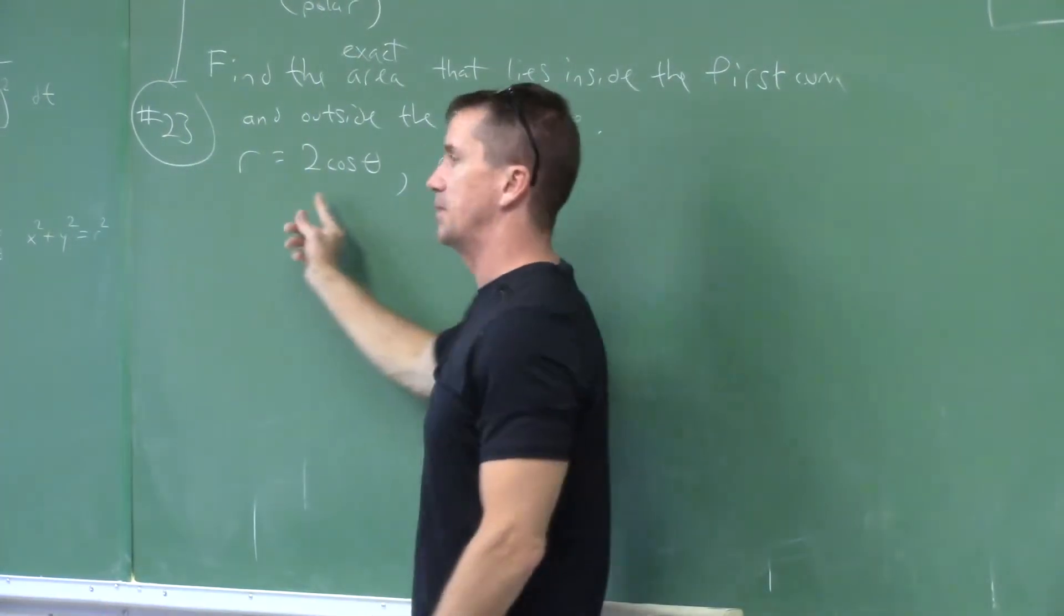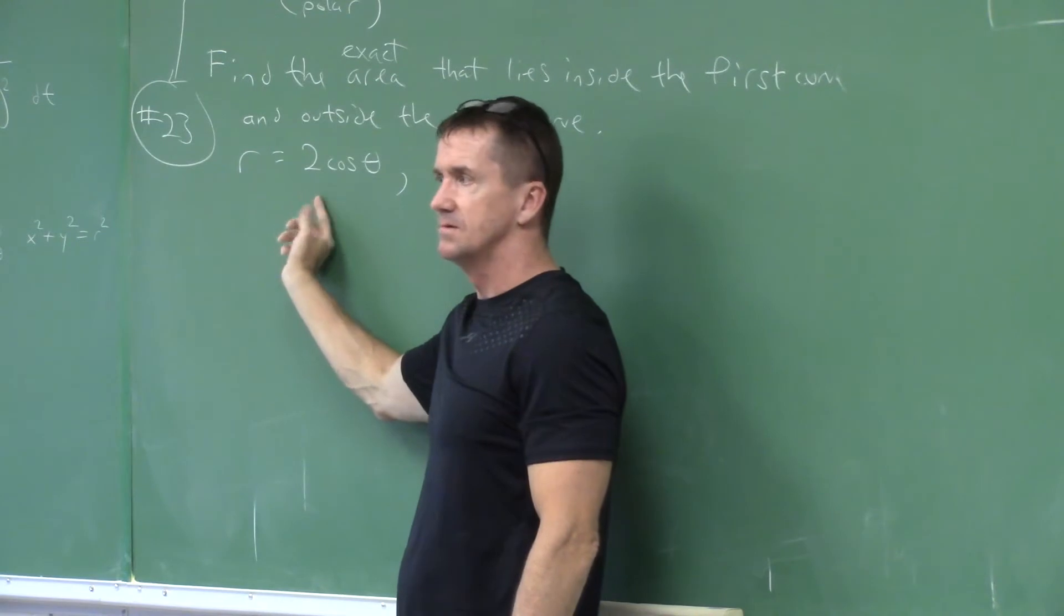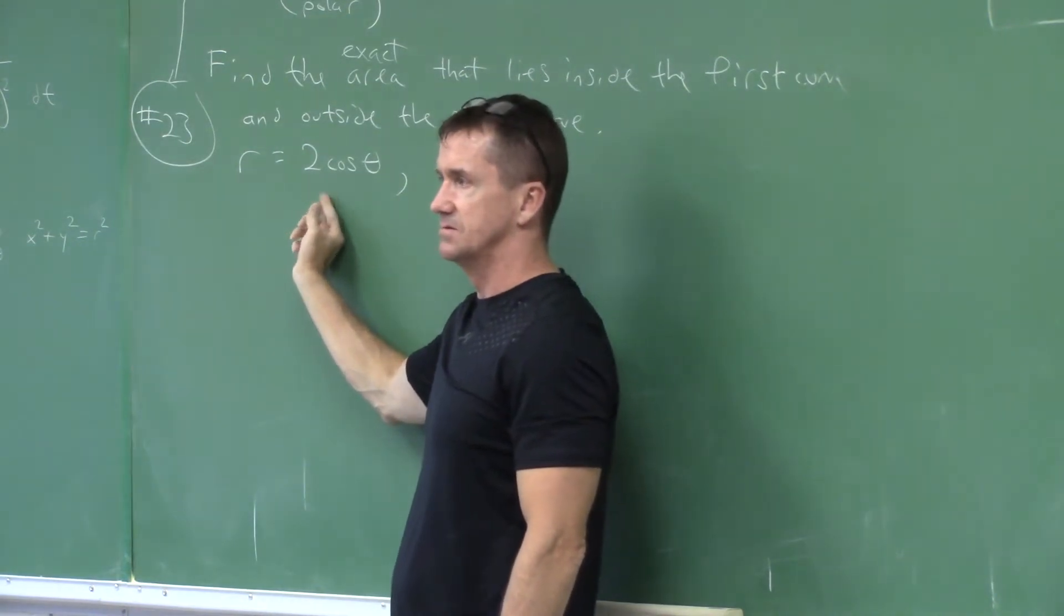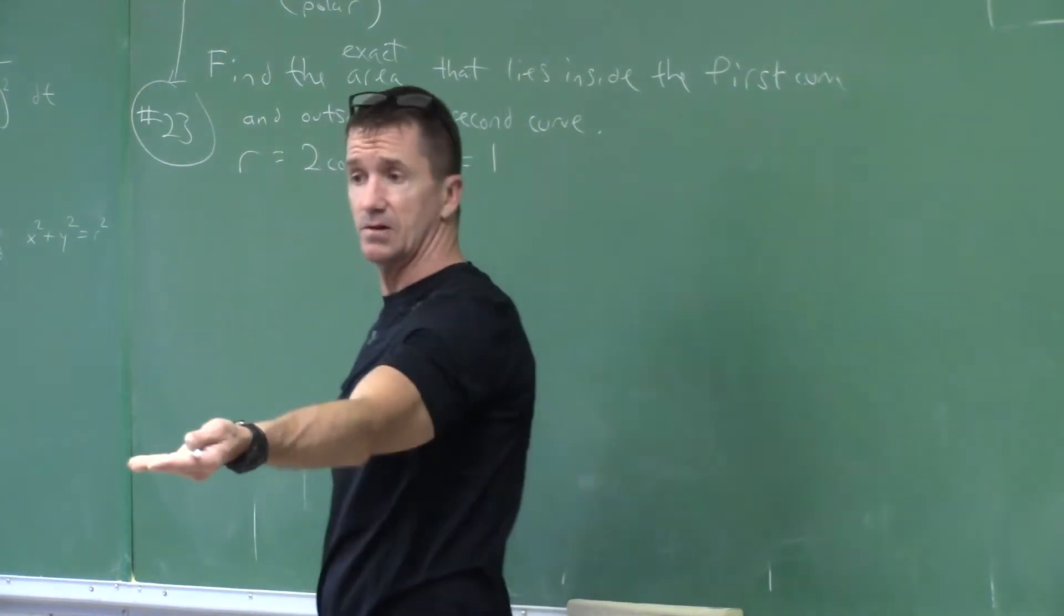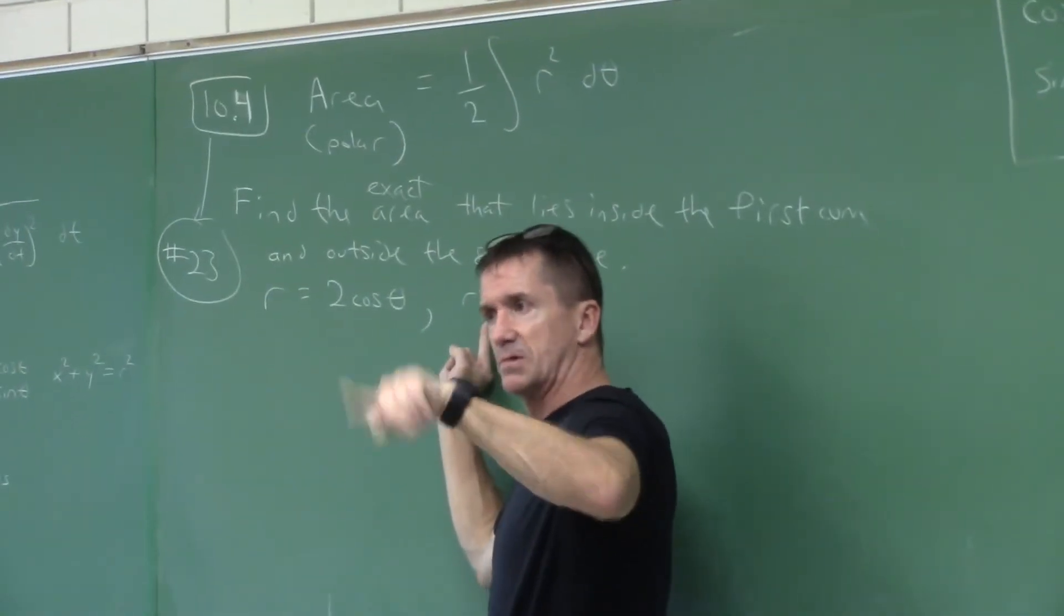That graph right there is not a graph of petals. That's a very simple polar curve that makes a circle. That just makes a circle. This also makes a circle. We know that's just a circle centered at the origin with a radius of one.